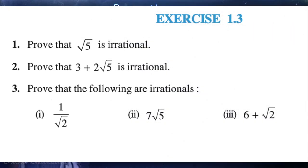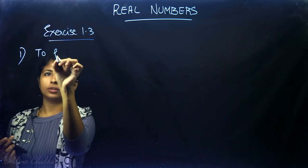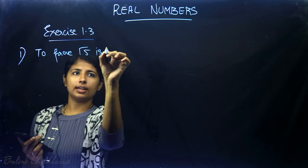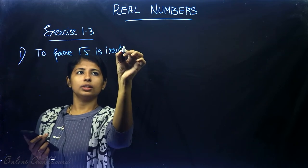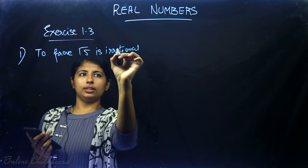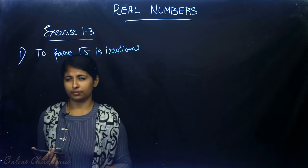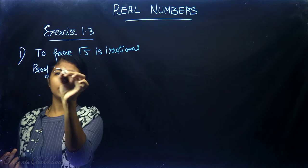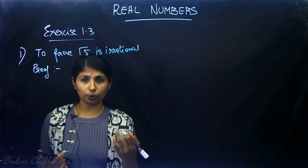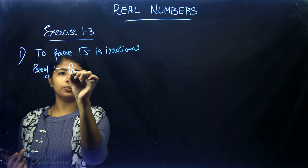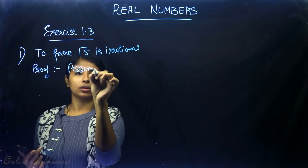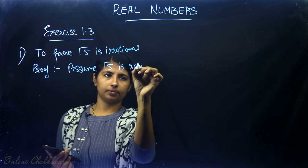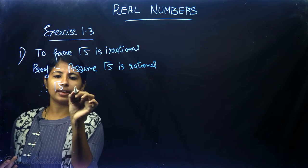The first question: we need to prove that √5 is irrational. To prove √5 is irrational, each and every question we can prove using proof by contradiction. The proof will do exactly the same as we did for √2 and √3.